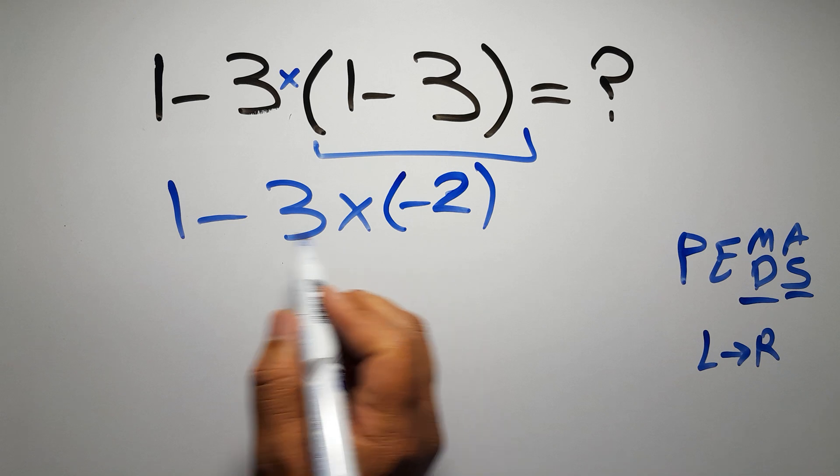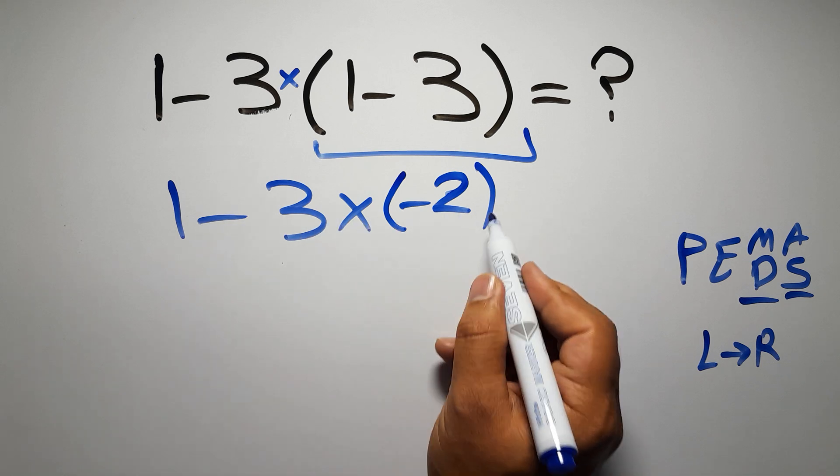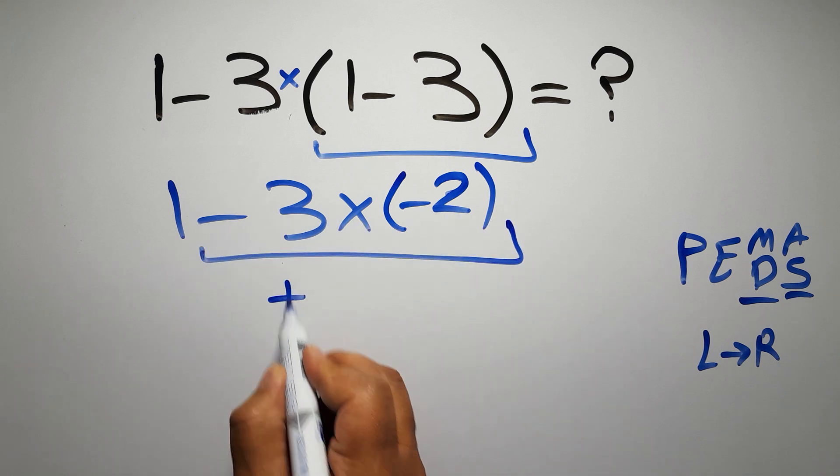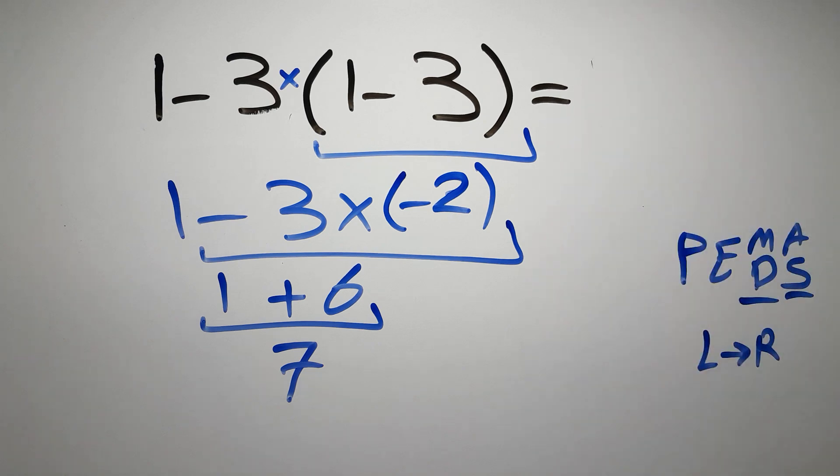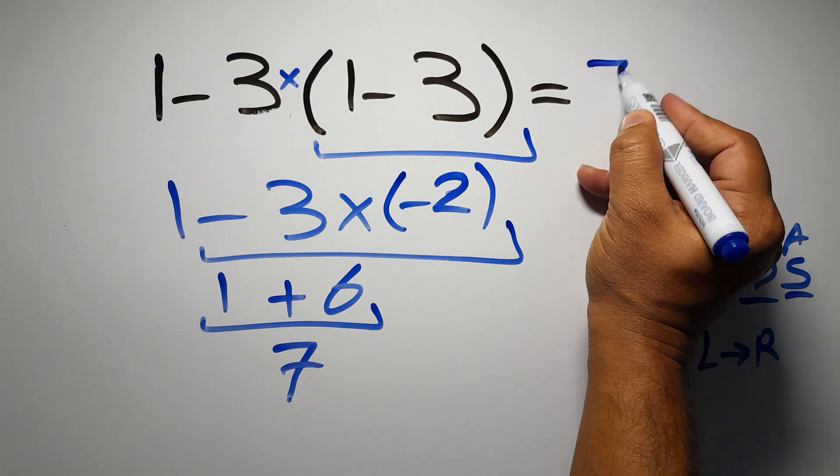Negative 3 times negative 2 gives us positive 6, so 1 plus 6 gives us 7. And this is our final answer to this problem. The correct answer is 7.